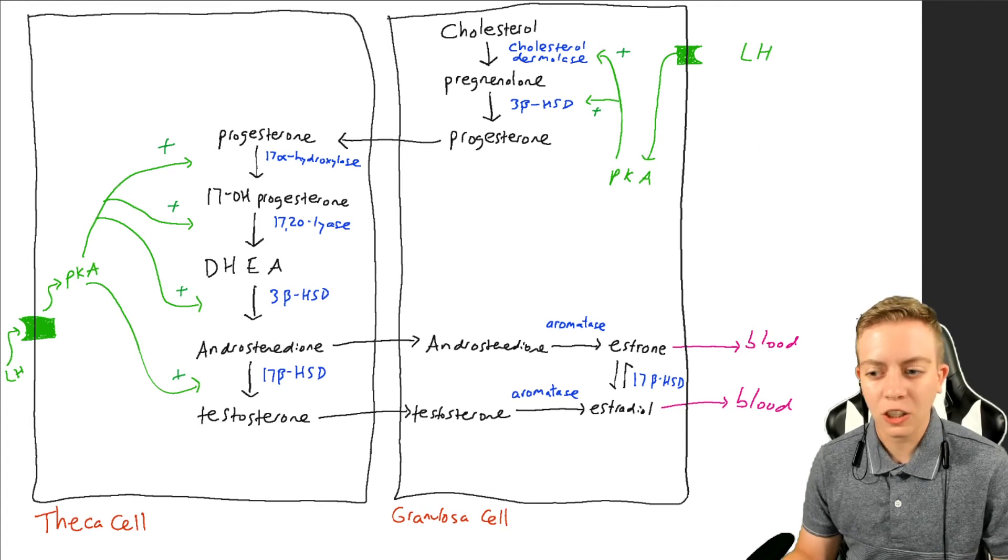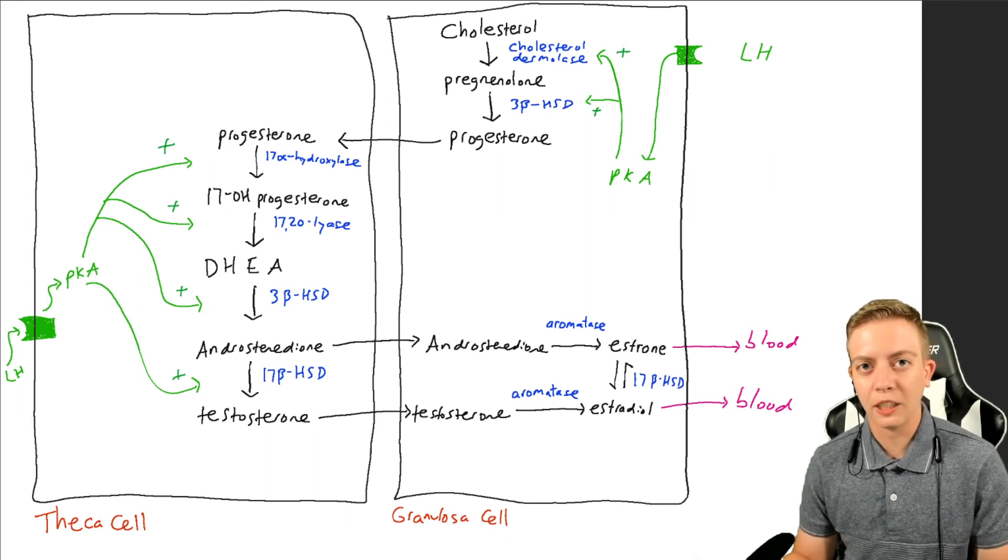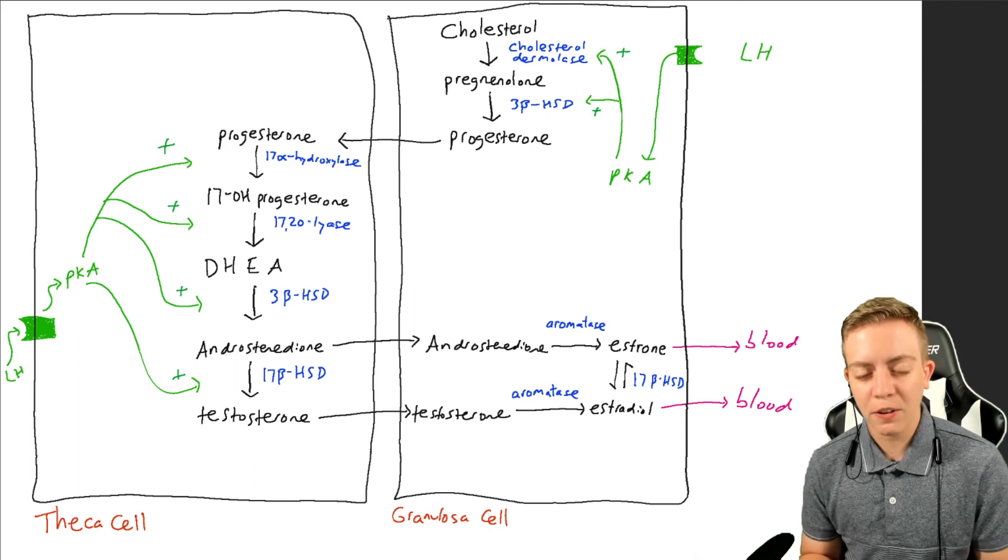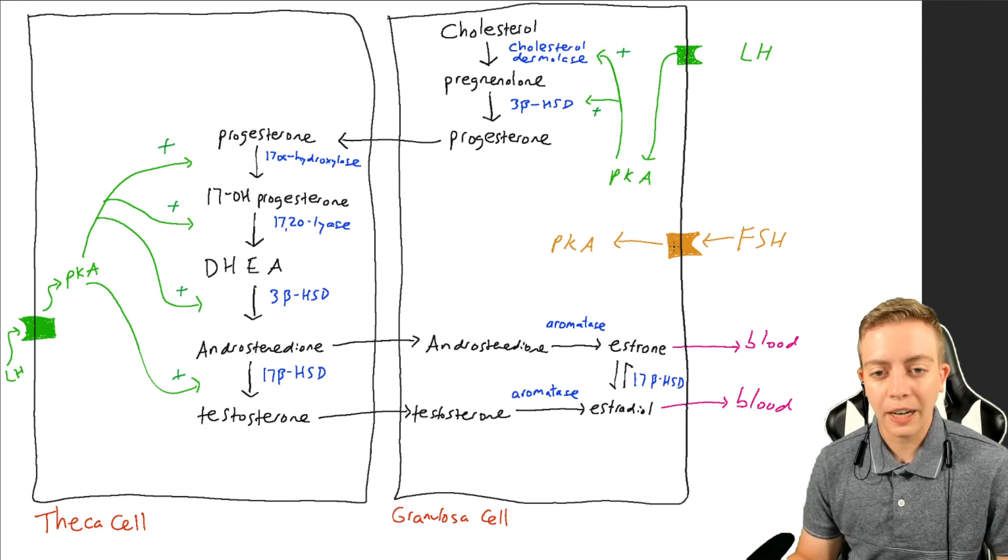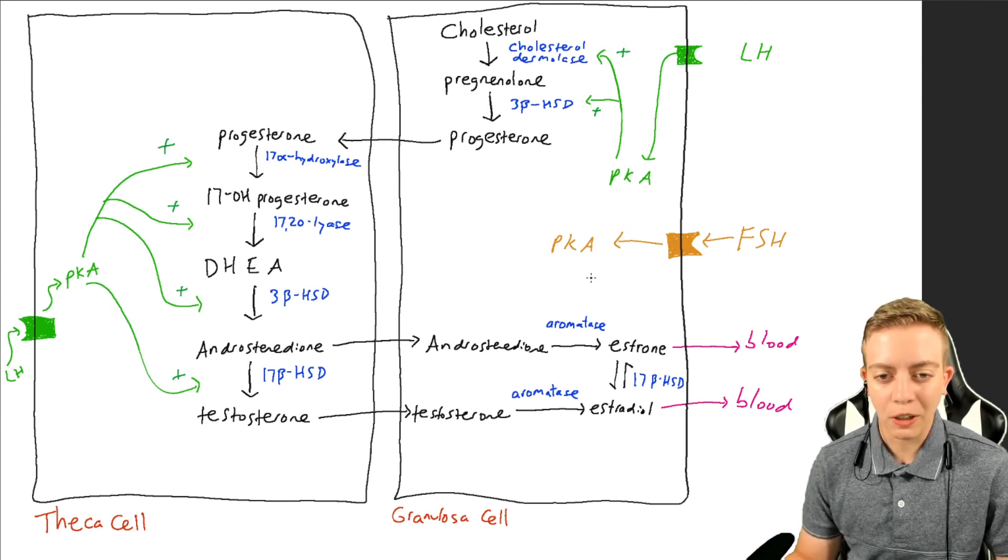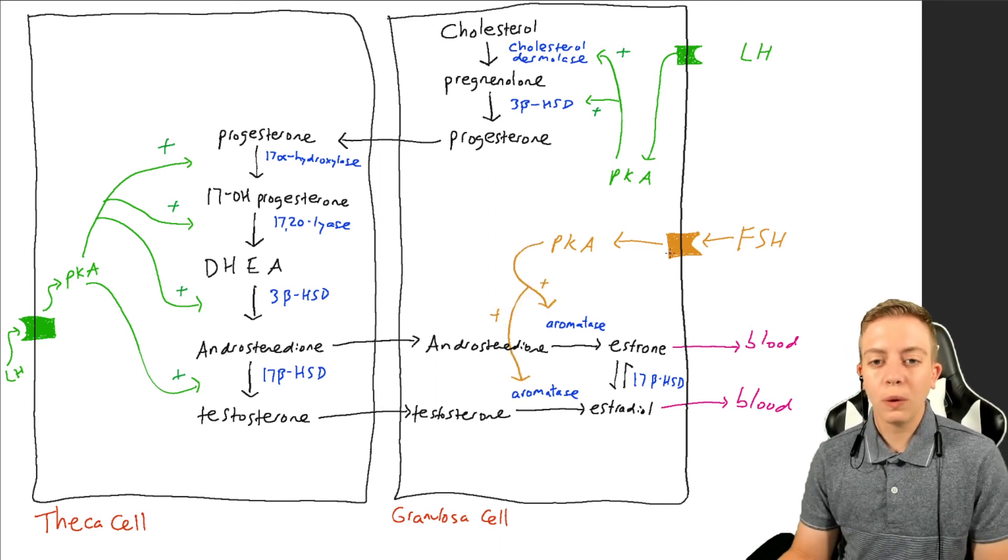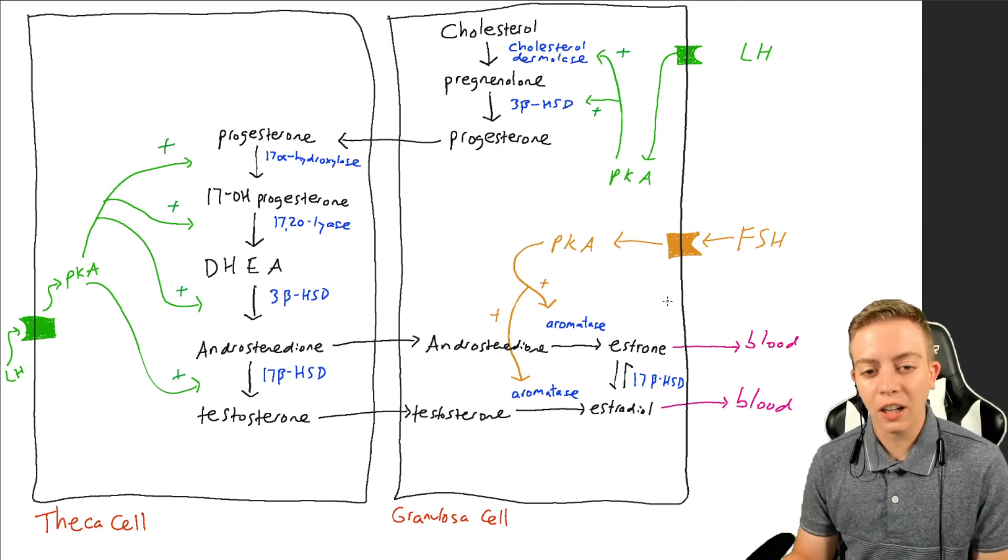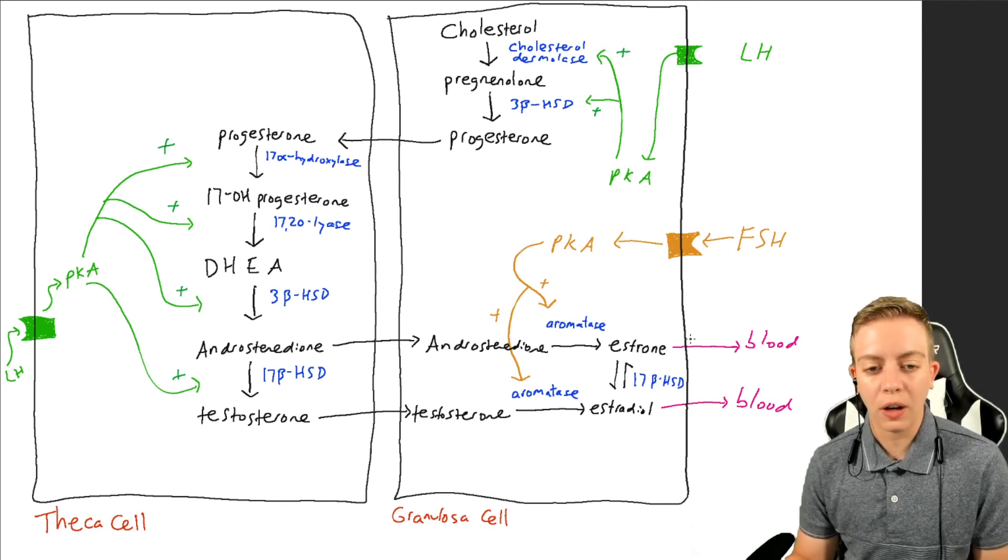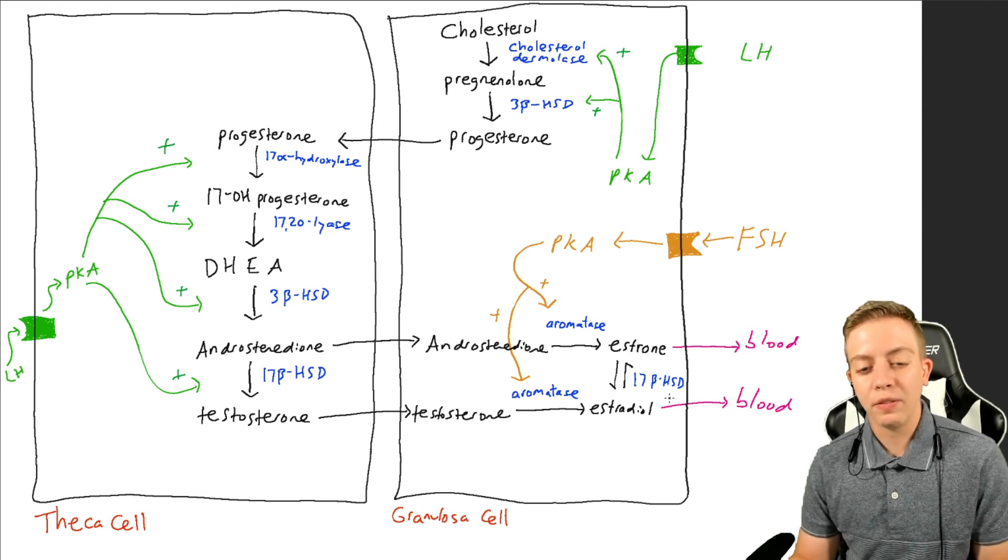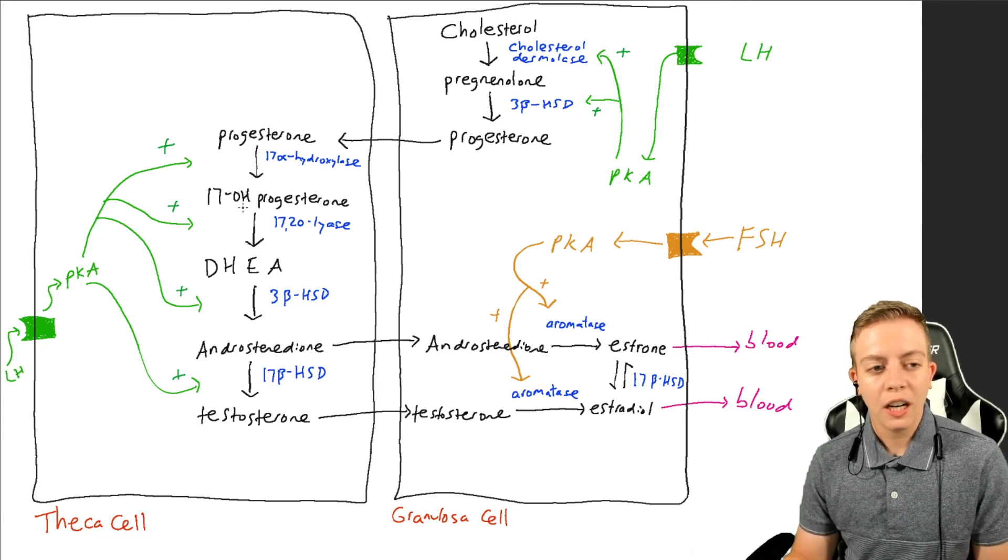All right, so what about FSH? Well, FSH is going to bind to a similar receptor, and once again I'll talk about the mechanism of cell signaling later on if you all want to hear about that. But FSH is going to bind similarly to a receptor, and then it is also going to activate protein kinase A, also known as PKA. But FSH is primarily going to stimulate aromatase, so we get increased production of estradiol and estrone, namely increased conversion of androstenedione to estrone and testosterone to estradiol via aromatase. So FSH, think of that dealing with aromatase; think of LH as dealing with